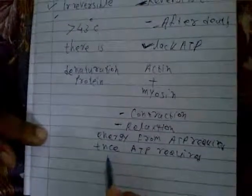Now what will happen after death? After death, lack of ATP occurs. So for a few hours there will be contraction, because energy from ATP is used — that is why contraction occurs. But whenever there is a lack of ATP, relaxation is not achieved, because for relaxation the presence of ATP is required. So after death: contraction occurs because energy is used, but because there is a lack of ATP, relaxation does not occur.